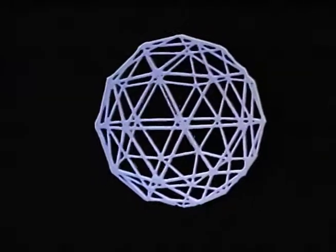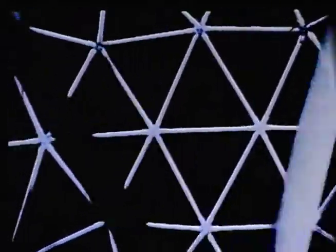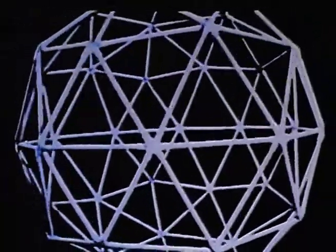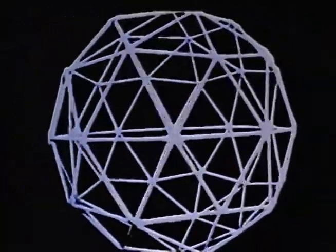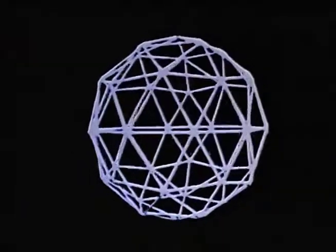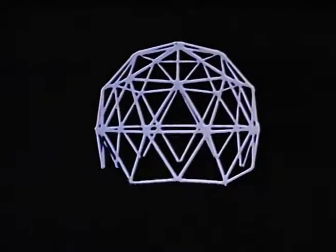Each linear segment is a portion of a great circle which divides the sphere in half. These spheres are called geodesics. The geodesic sphere encloses the most amount of space with the least amount of materials.